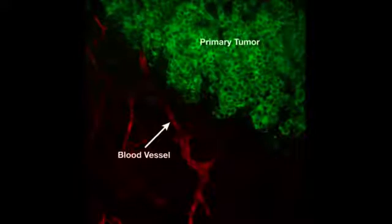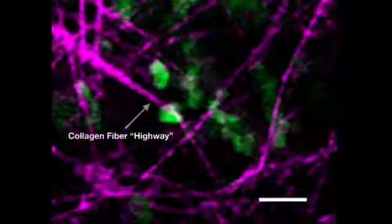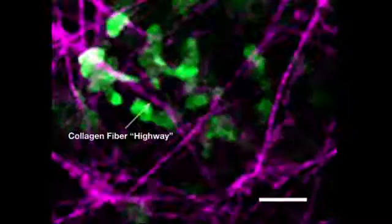Now, you'll see the movies we shot within a live mouse. These are breast cancer cells dissociating from the other cells in a primary tumor and heading towards a blood vessel.